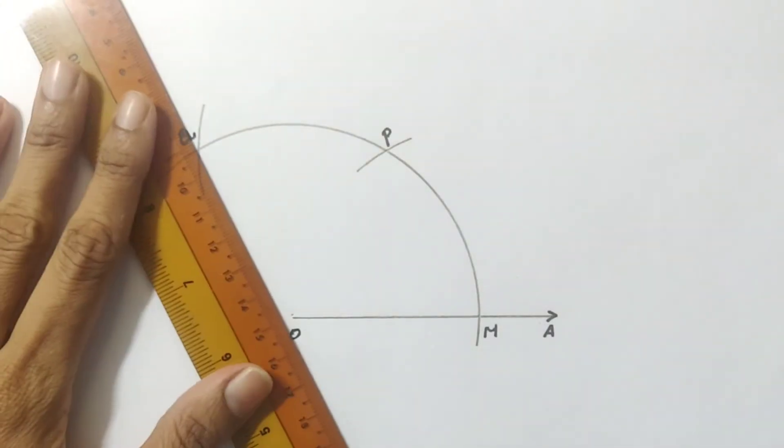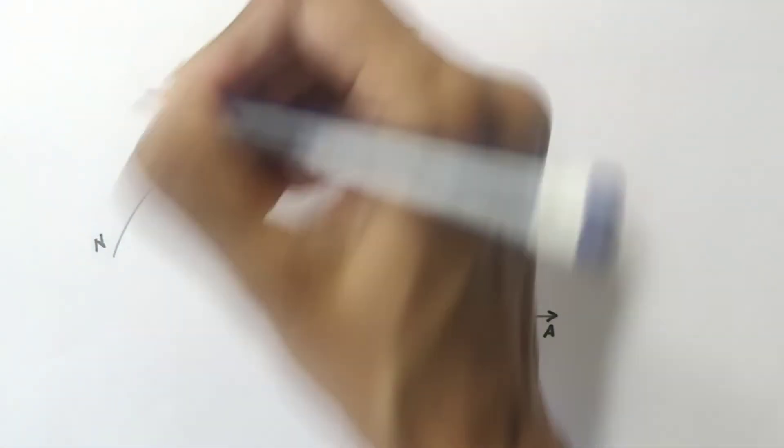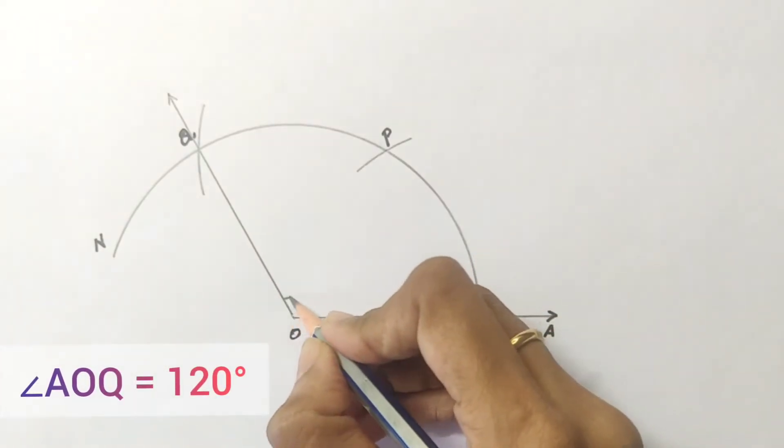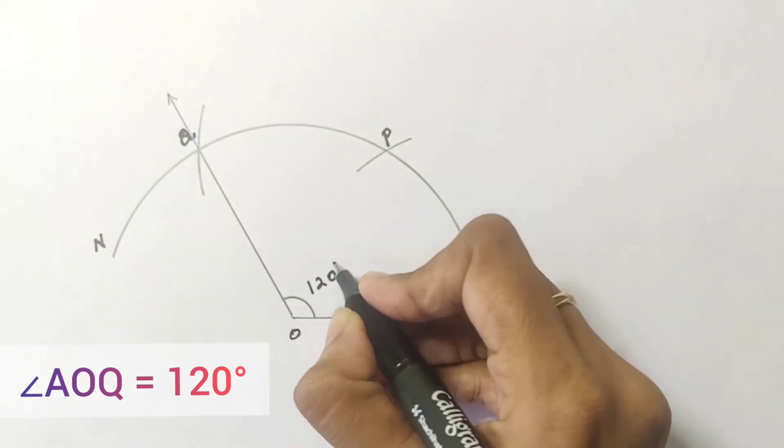Draw a ray passing through OQ. Now angle AOQ is equal to 120 degrees.